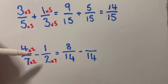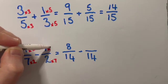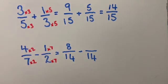And two times seven is 14. So I'm going to times the top by seven also, which makes seven.